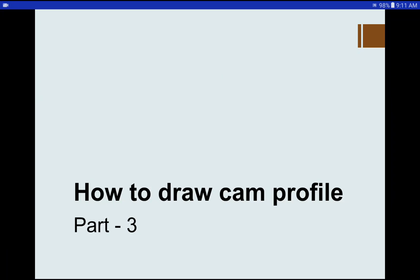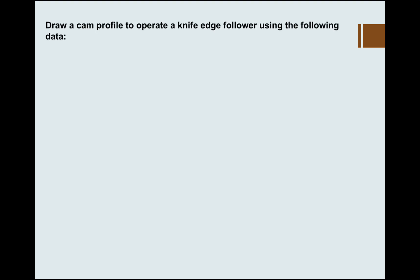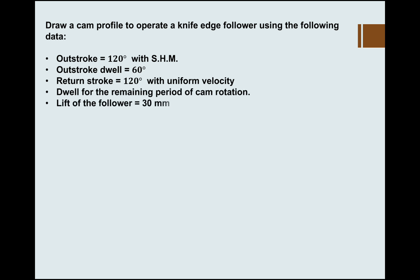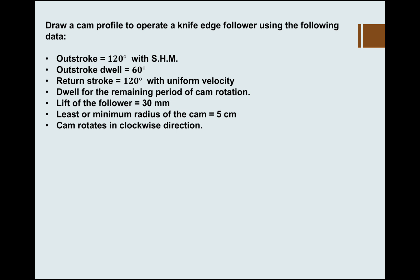In this video we will try to understand how to draw a cam profile. We have to draw a cam profile to operate a knife edge follower using the following data: the outstroke of the follower is 120 degrees with simple harmonic motion, outstroke dwell is 60 degrees, return stroke is 120 degrees with uniform velocity, and dwell for the remaining period of cam rotation. Lift of the follower is 30mm, minimum radius of the cam is 5cm, and the cam rotates in clockwise direction.